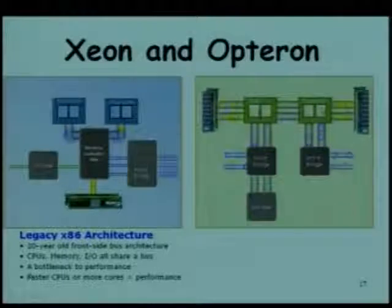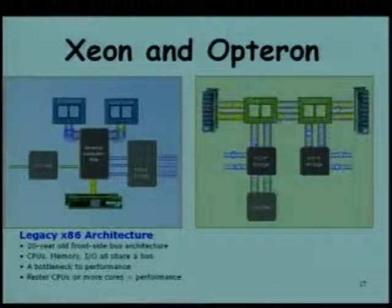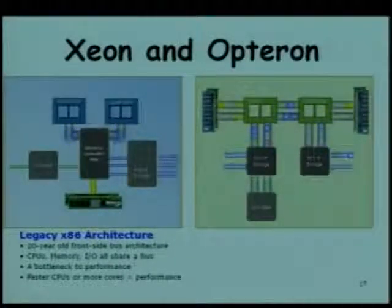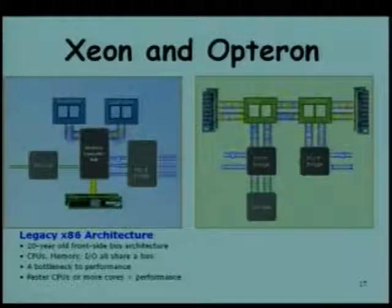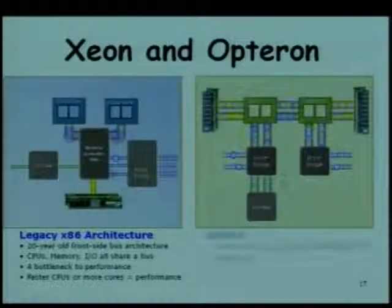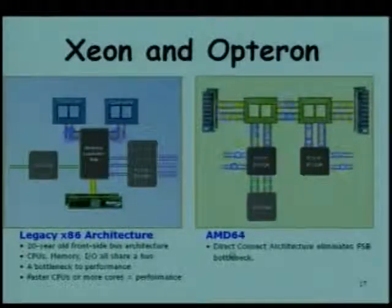On the other hand, looking at the Opteron: it uses switches with individual independent connections between processors. AMD calls this the Direct Connect Architecture (DCA) and it eliminates the FSB bottleneck. With 4 processors, the FSB would become an even bigger bottleneck. Here the memory and I/O are directly connected via a direct connect switch.